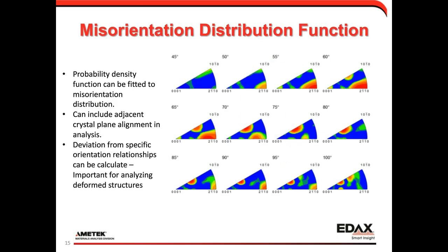We can take these same misorientation relationships and fit them to a Misorientation Distribution Function, which gives us the probability above randomness that a specific relationship has developed. This is important because it can be used to analyze deformation and orientation relationships during the phase transformation, giving an idea of how crystal planes are aligned between different packets and laths in the structure.